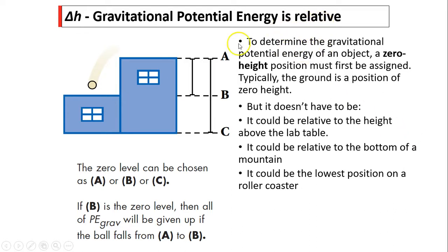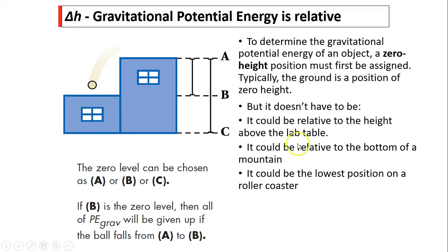Gravitational potential energy is relative because the equation contains Δh. Consider a ball at three heights labeled a, b, and c — the zero level can be chosen as a, b, or c. To determine gravitational potential energy, a zero height position must first be assigned. Typically the ground is chosen as zero height, but it could be the lab table, the bottom of a mountain, or the lowest point on a roller coaster. That's why gravitational potential energy is relative.